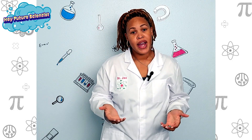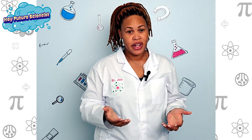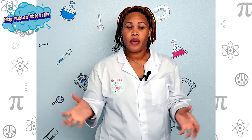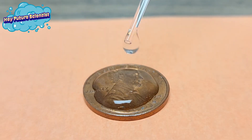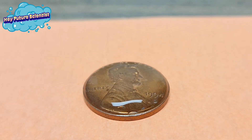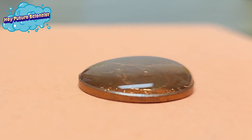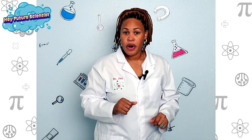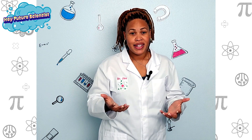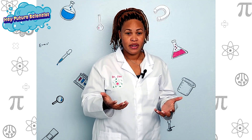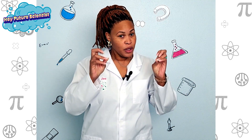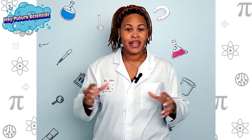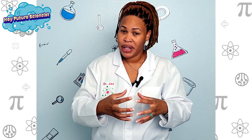Water has a very high surface tension. This is why water droplets form a sphere instead of spreading out flat. Since milk is mostly water, it also has a high surface tension, and the film on top keeps the dye in place.